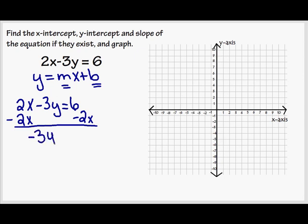So that leaves me with negative 3y equals negative 2x plus 6. Now, I need to get y by itself to look like my formula. So I'm going to divide by negative 3. And actually, I divide each part by negative 3.